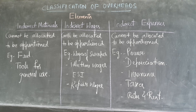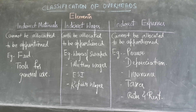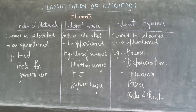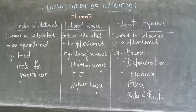The third part is indirect expenses. Indirect expenses also cannot be allocated — they have to be apportioned. We cannot directly allocate anything to a department; it needs to be distributed based on proportion. Examples include power, depreciation of assets, insurance of stock and assets, taxes, rates, and rents.